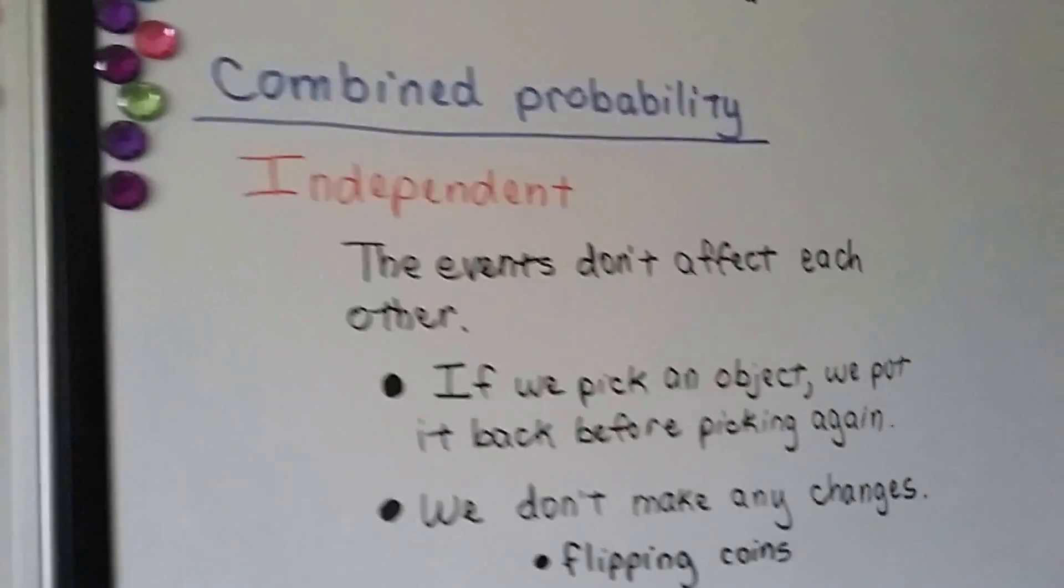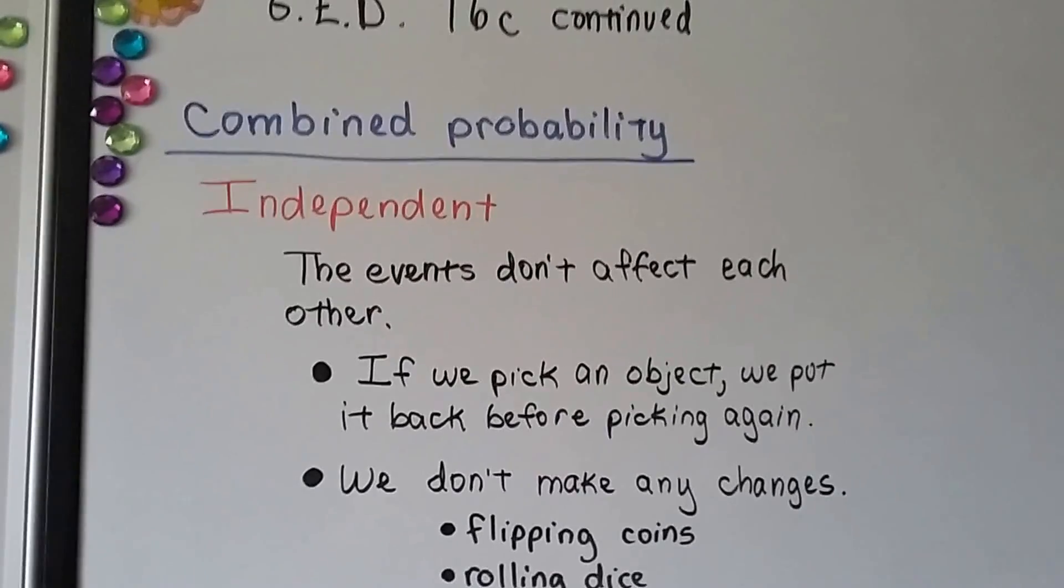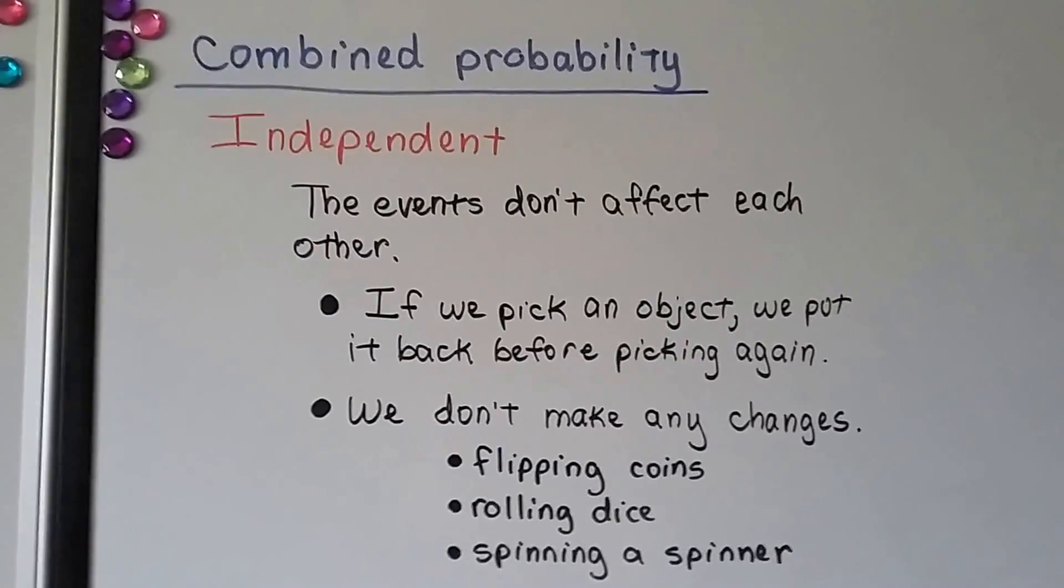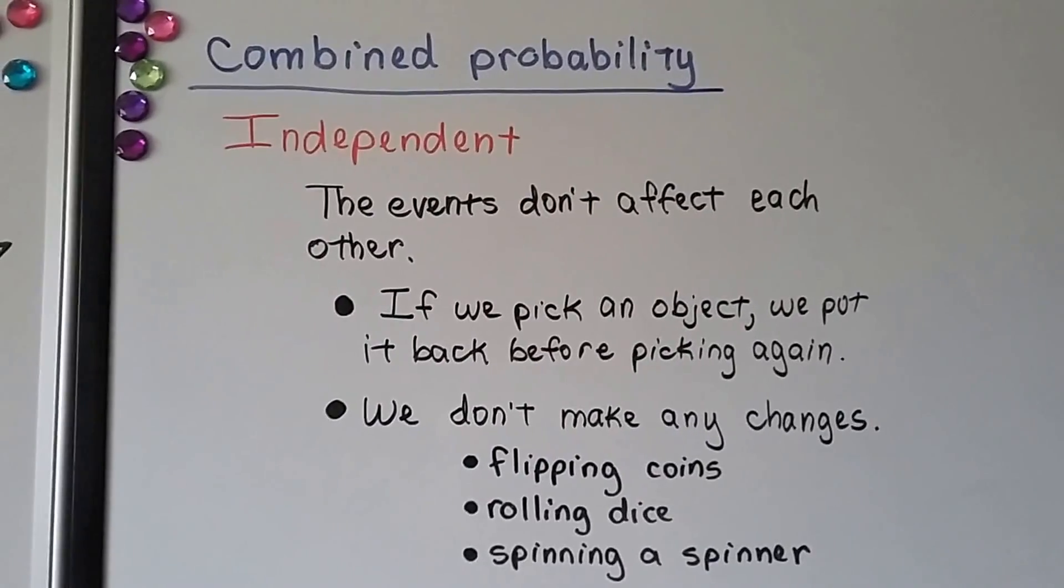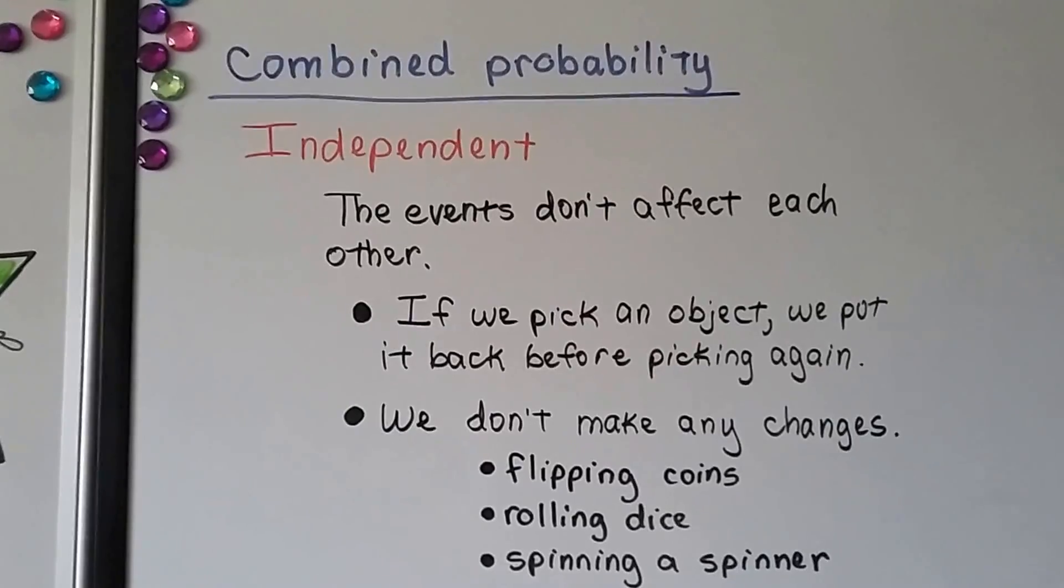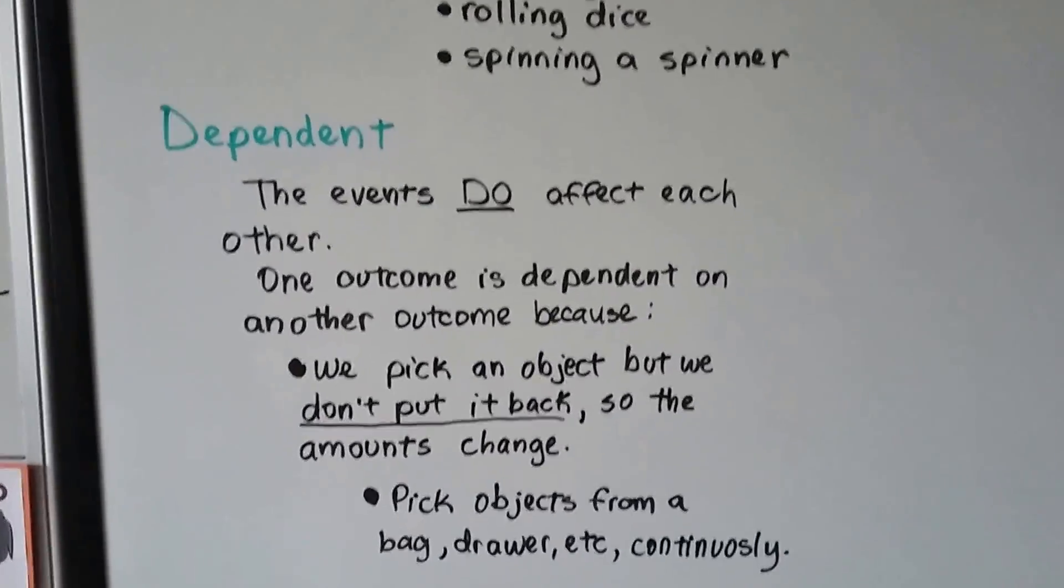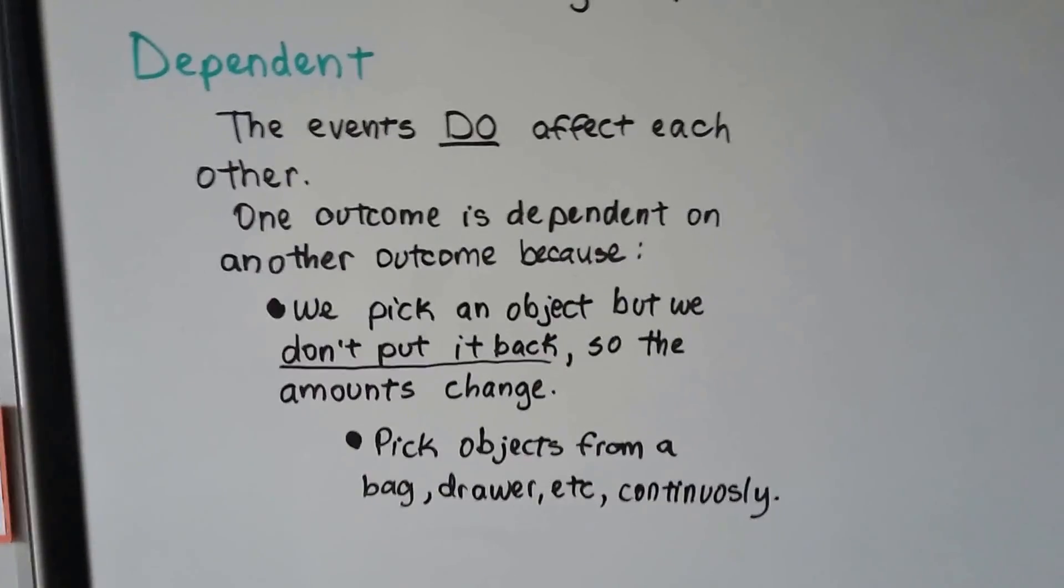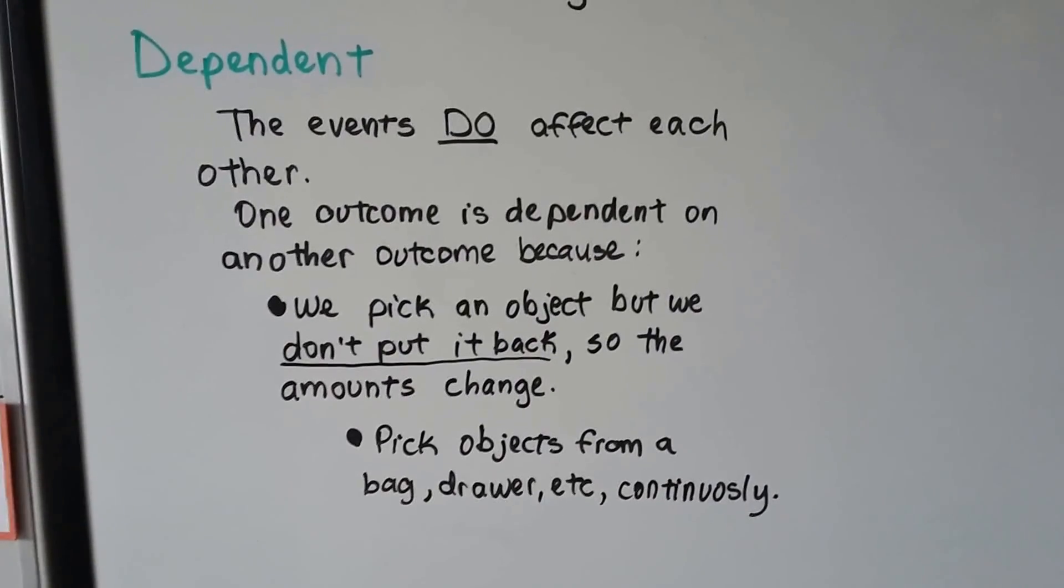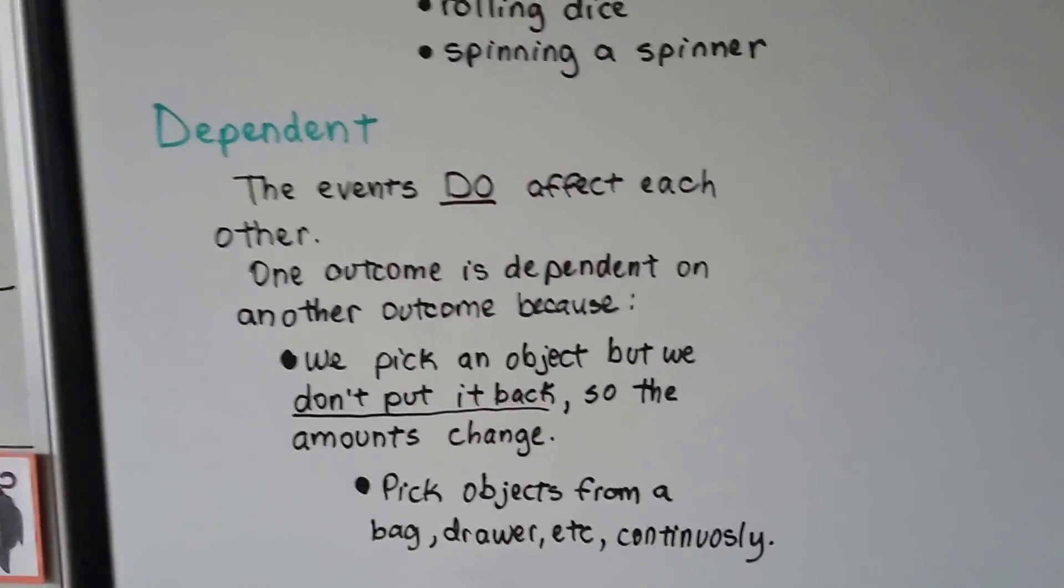So for combined probability, it's independent if the events don't affect each other. If we pick an object, we put it back before picking again, or we don't make any changes, or it's like flipping coins, rolling dice, spinning a spinner. Those are all independent. They don't affect each other. Like, picking the ribbon out of the bag is not going to affect how we roll the dice. Dependent is when the events do affect each other. One outcome is dependent on the other outcome, because if we pick an object, we don't put it back. So the amounts change, like picking the objects from a bag or drawer, and we continuously pick, and the totals change.